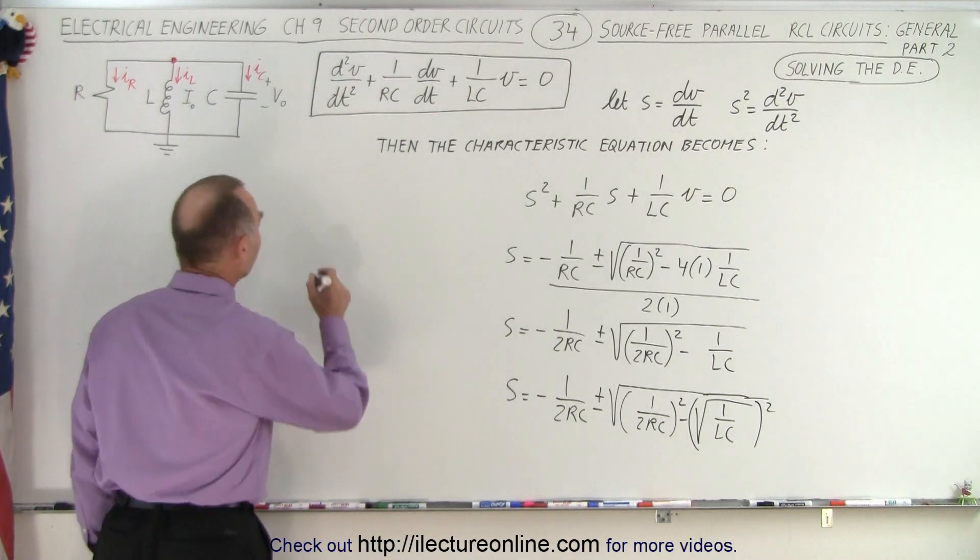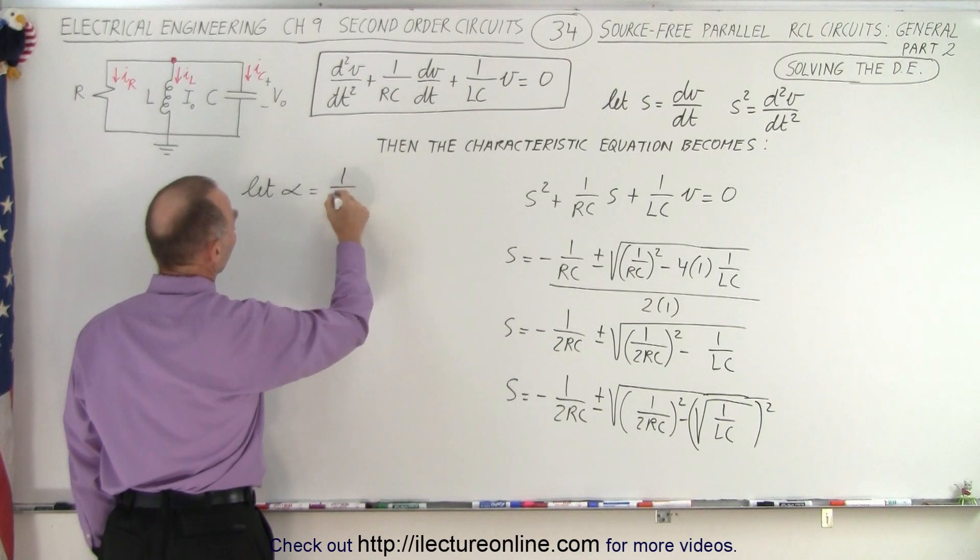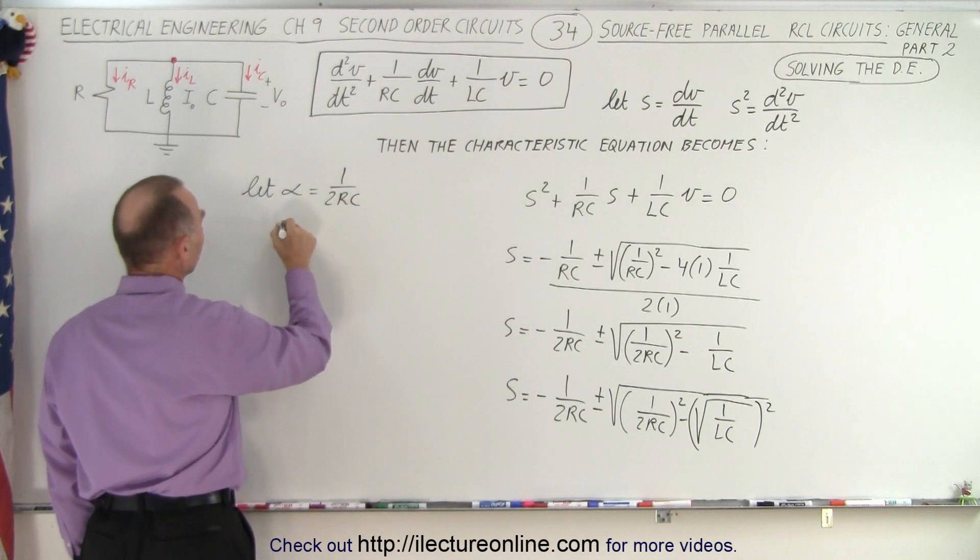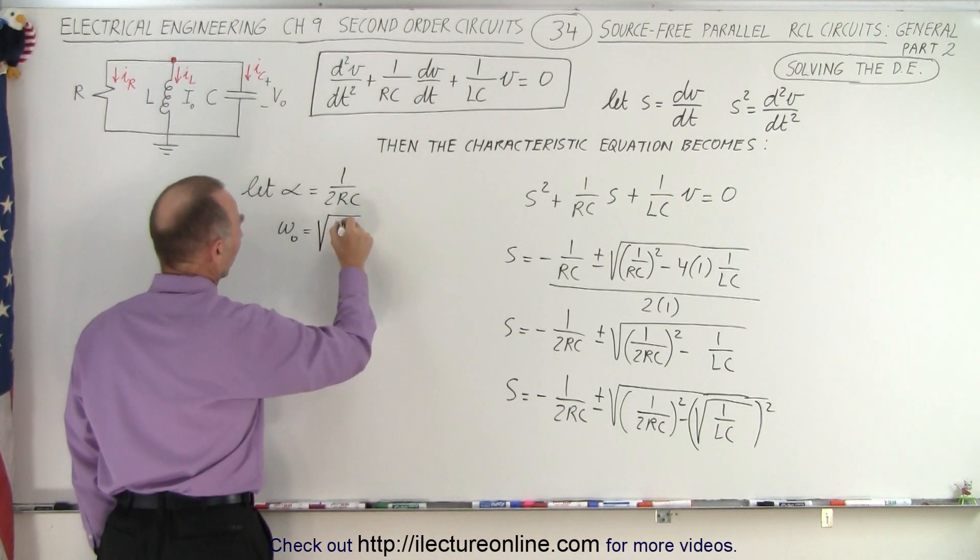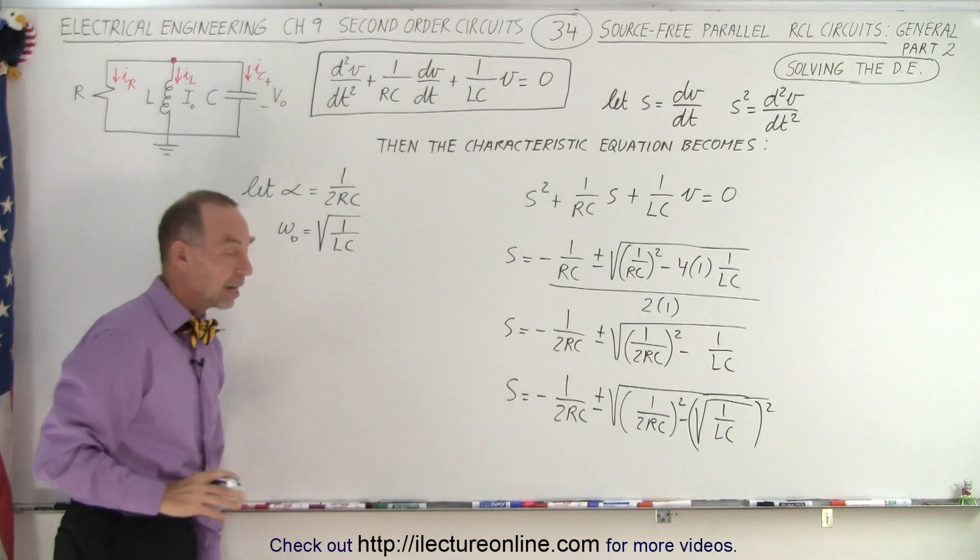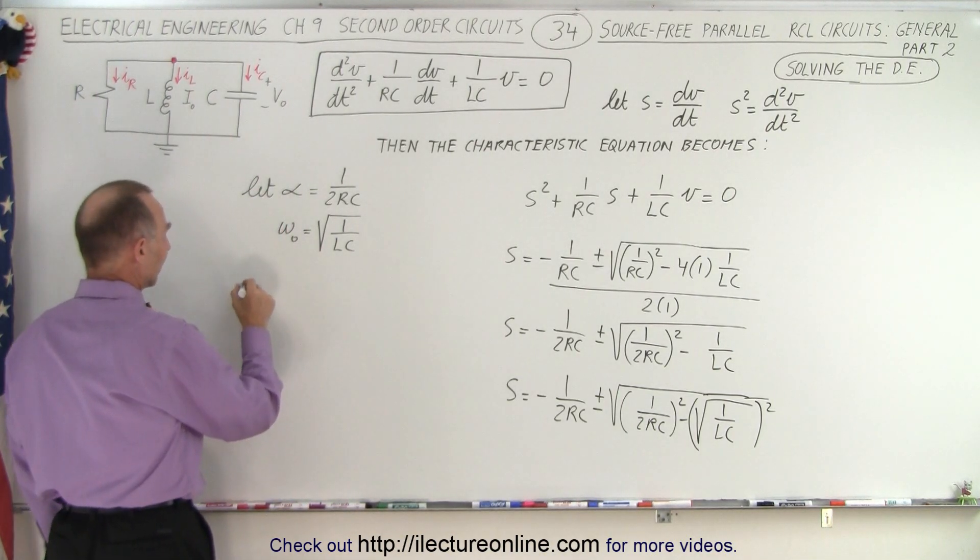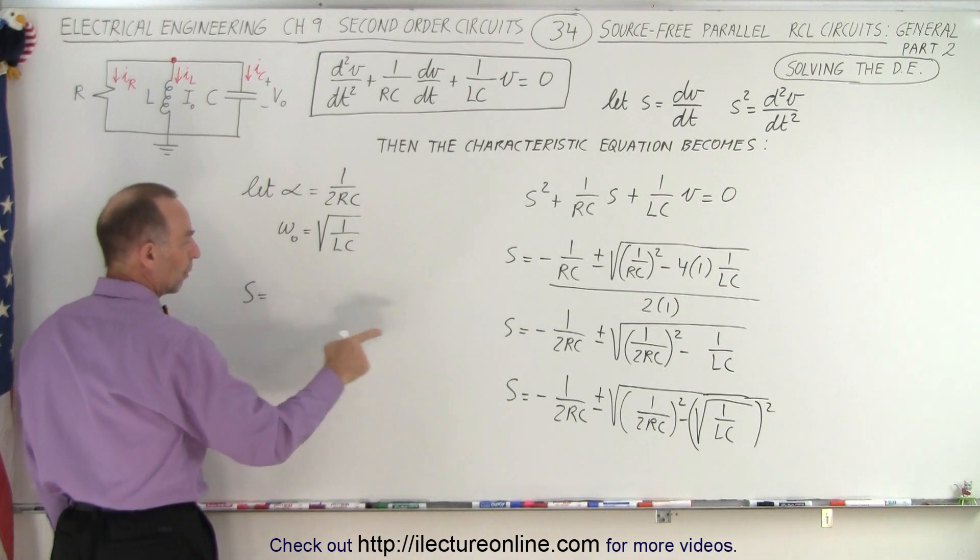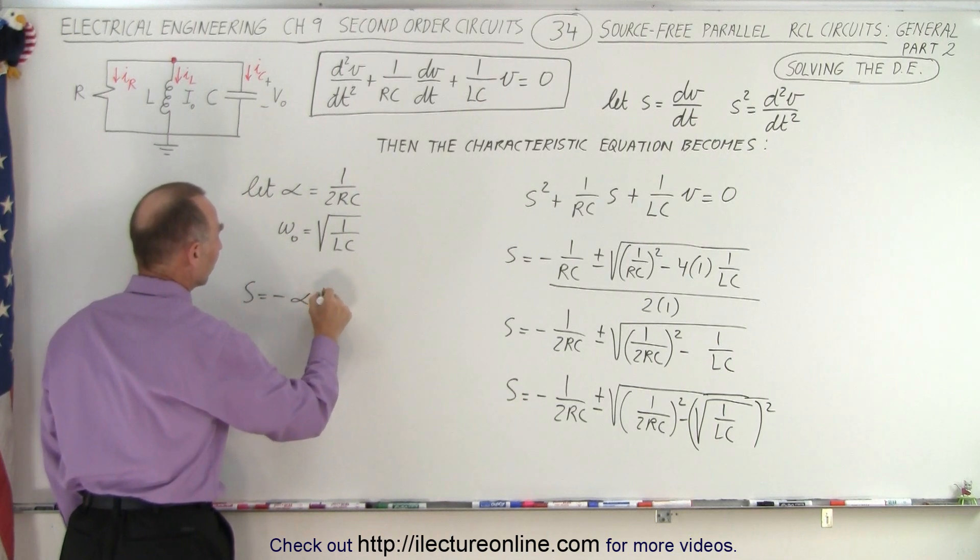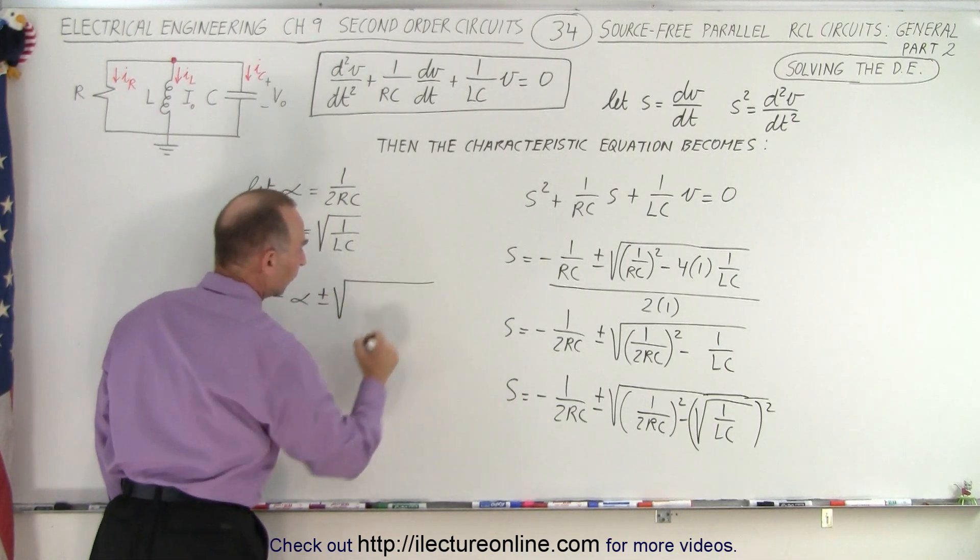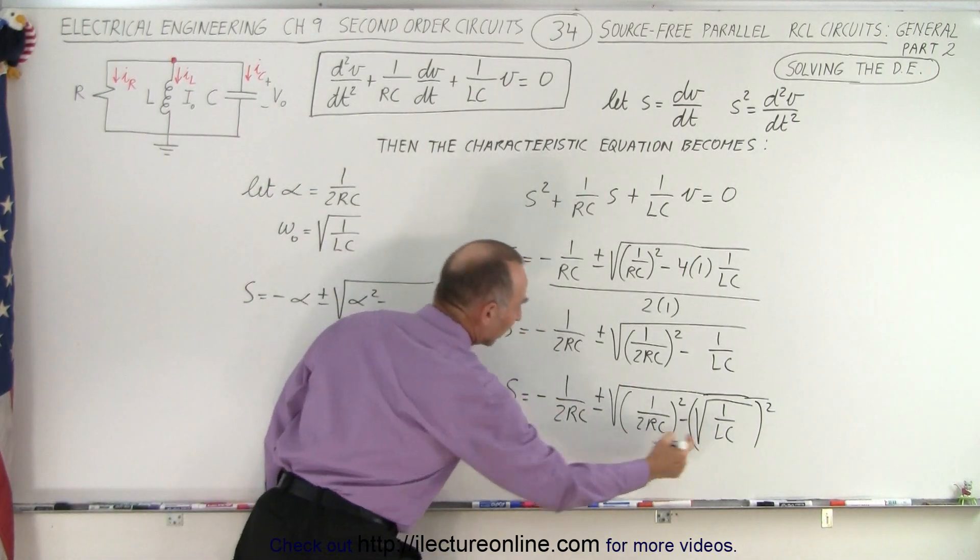Because now what we're going to do is let alpha equal 1 over 2RC, and we're going to let omega sub 0 equal the square root of 1 over LC. If we now make that substitution, then we can see that S equals minus alpha plus or minus the square root of alpha squared minus omega sub 0 squared.